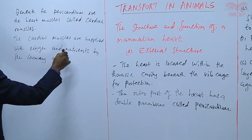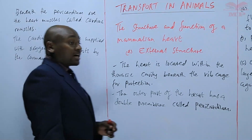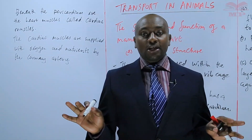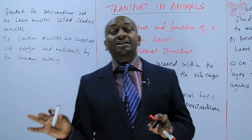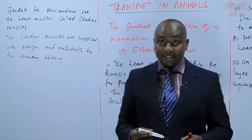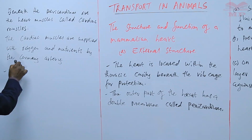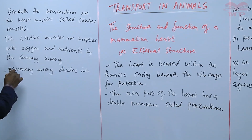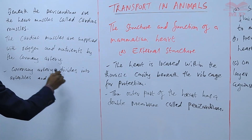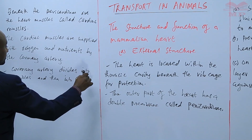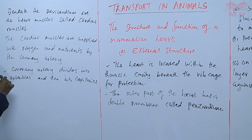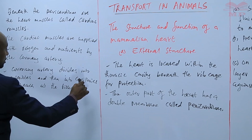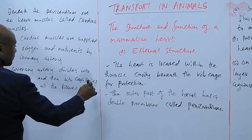The coronary artery divides into several arterioles and then into capillaries to make sure that oxygen and nutrients reach all the tissues within the cardiac muscles.